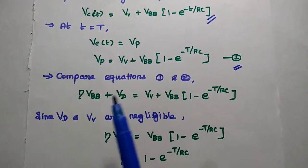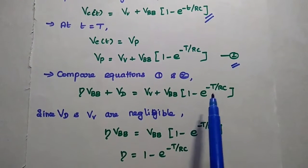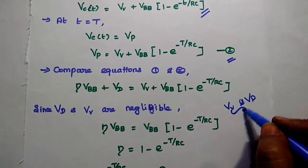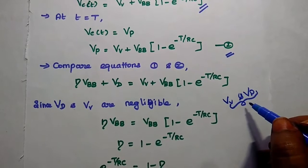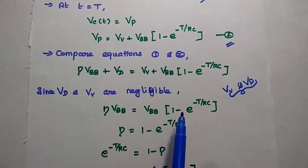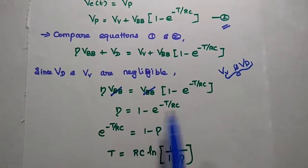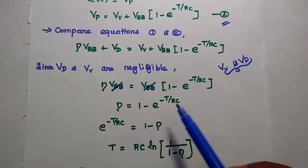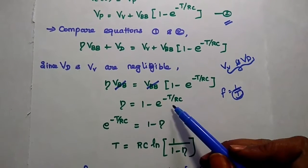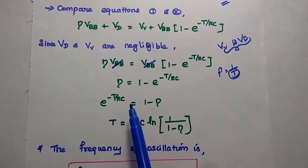Comparing equations 1 and 2 — both representing peak voltage — we write: eta times VBB plus VD equals valley voltage plus VBB times (1 minus e to the power minus T by RC). Since valley voltage and diode cut-in voltage are very small compared to supply voltage, we simplify to: eta times VBB equals VBB times (1 minus e to the power minus T by RC). Cancelling VBB: eta equals 1 minus e to the power minus T by RC. Rearranging: e to the power minus T by RC equals 1 minus eta.